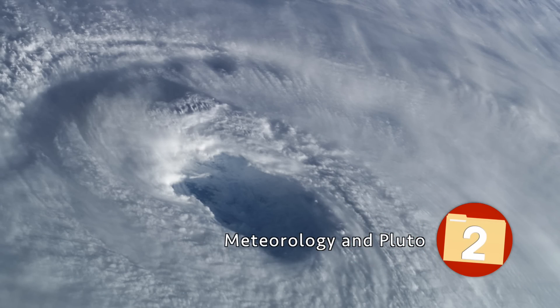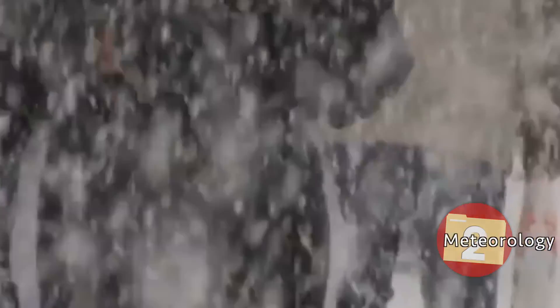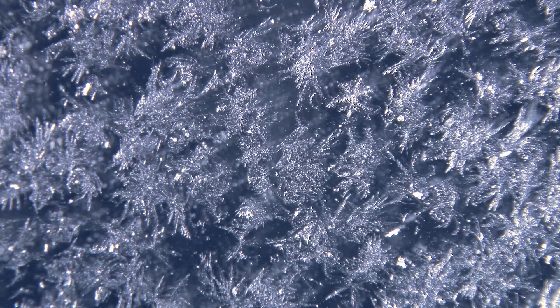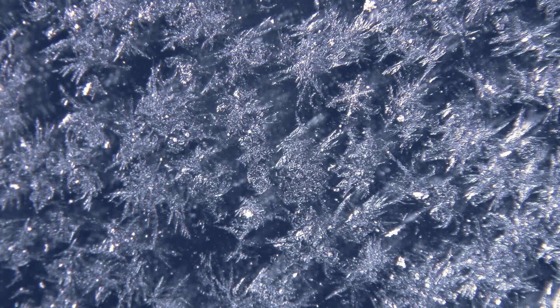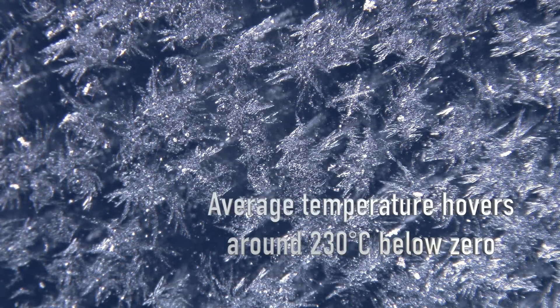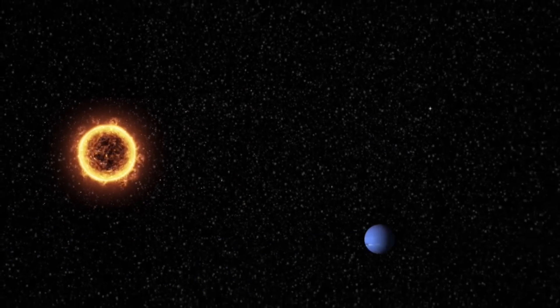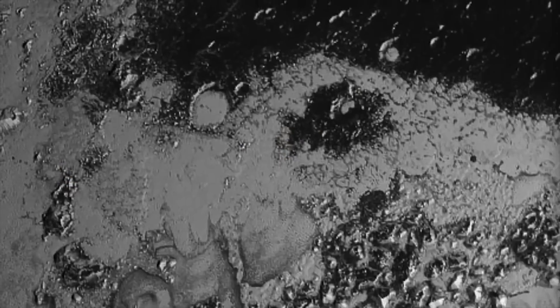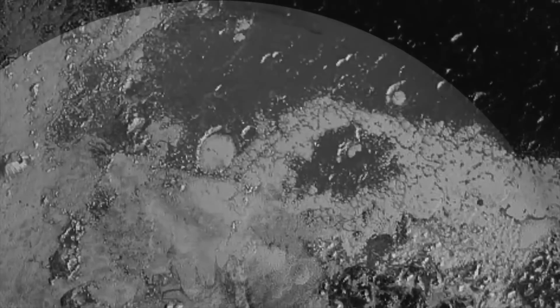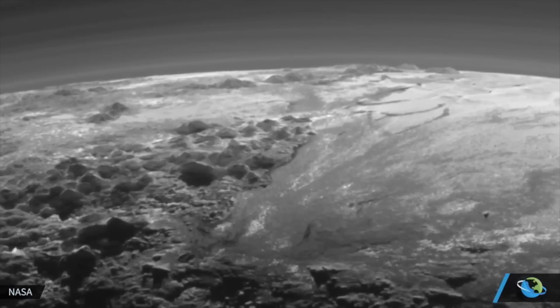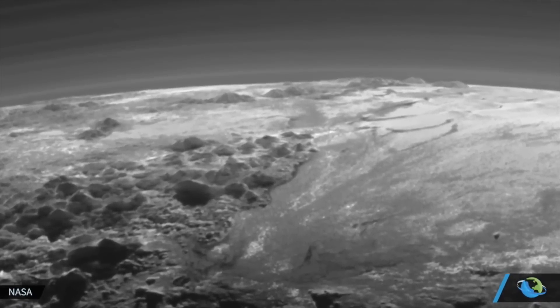Meteorology and Pluto. If you think you have it bad when your winter temperature doesn't creep above freezing, imagine living on a planet with an average temperature that hovers around 230 degrees Celsius below zero, or minus 382 degrees Fahrenheit. Being the farthest from the sun, it's understandable that, by the time the sun's rays breach its gaseous atmosphere and reach the surface, the rays are considerably weaker.